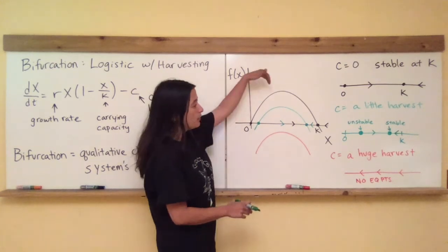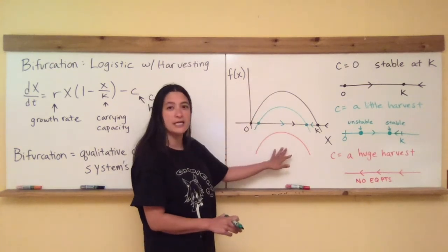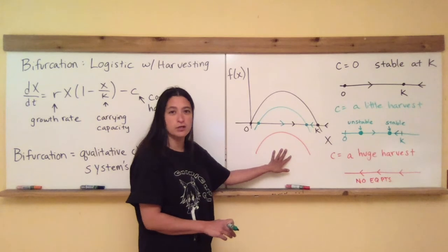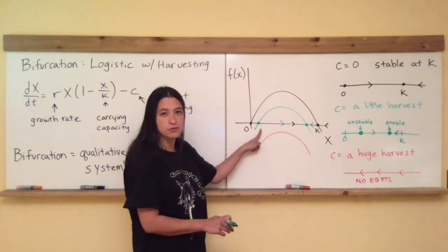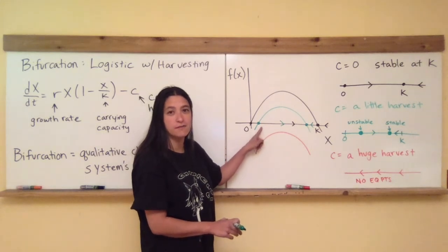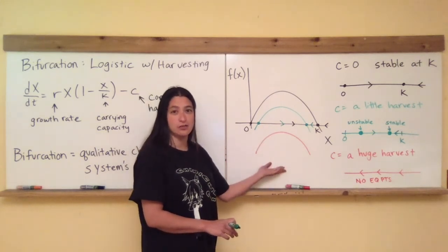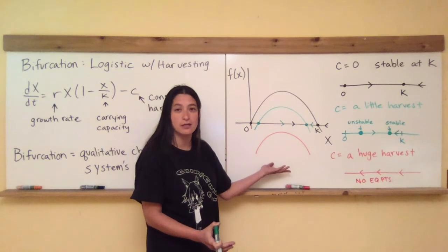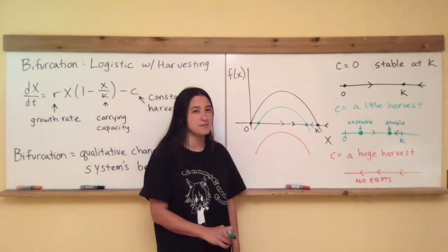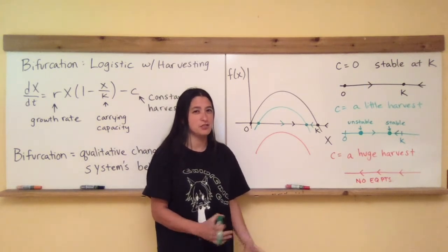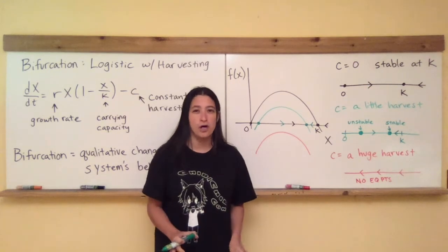And you can see that if I pull this black graph down far enough, it will no longer intersect the x-axis. That means the zeros, or the roots, or the x-intercepts of this graph no longer exist in the red case. They've disappeared. Now that's not qualitatively the same thing as having two. Two and zero, those are qualitatively different.